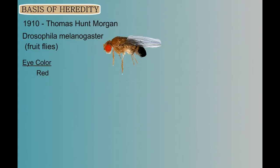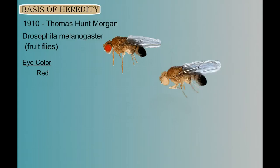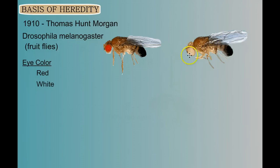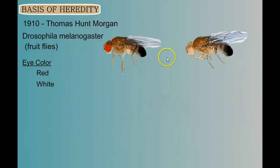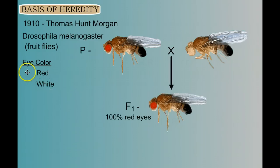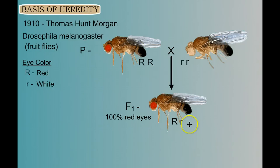But one day, Morgan happened to find a white-eyed male fruit fly, which suggests a white eye allele — a mutant version. So logically, he wanted to cross these two and see what would happen. When you cross these two parent fruit flies, all of your F1 generation have red eyes, which suggests that the red eye allele is dominant to the white eye allele, giving us these genotypes.